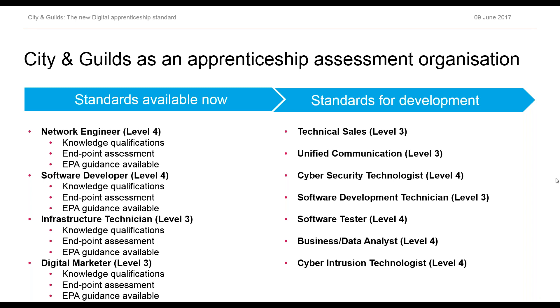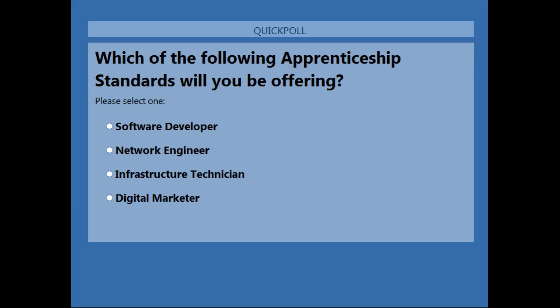We have the next poll. The question is: which of the following apprenticeship standards will you be offering? The options are Software Developer, Network Engineer, Infrastructure Technician and Digital Marketer. If you don't see the one you're delivering, don't worry — this poll is in two parts, so it might appear in the next one.